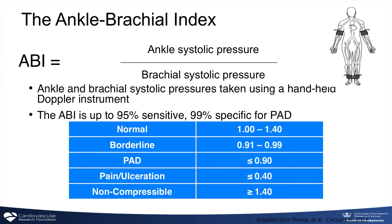Ratios less than 0.99 are considered borderline; less than 0.9 are abnormal and diagnostic of PAD. Patients with ratios less than 0.4 are at risk for spontaneous gangrene.